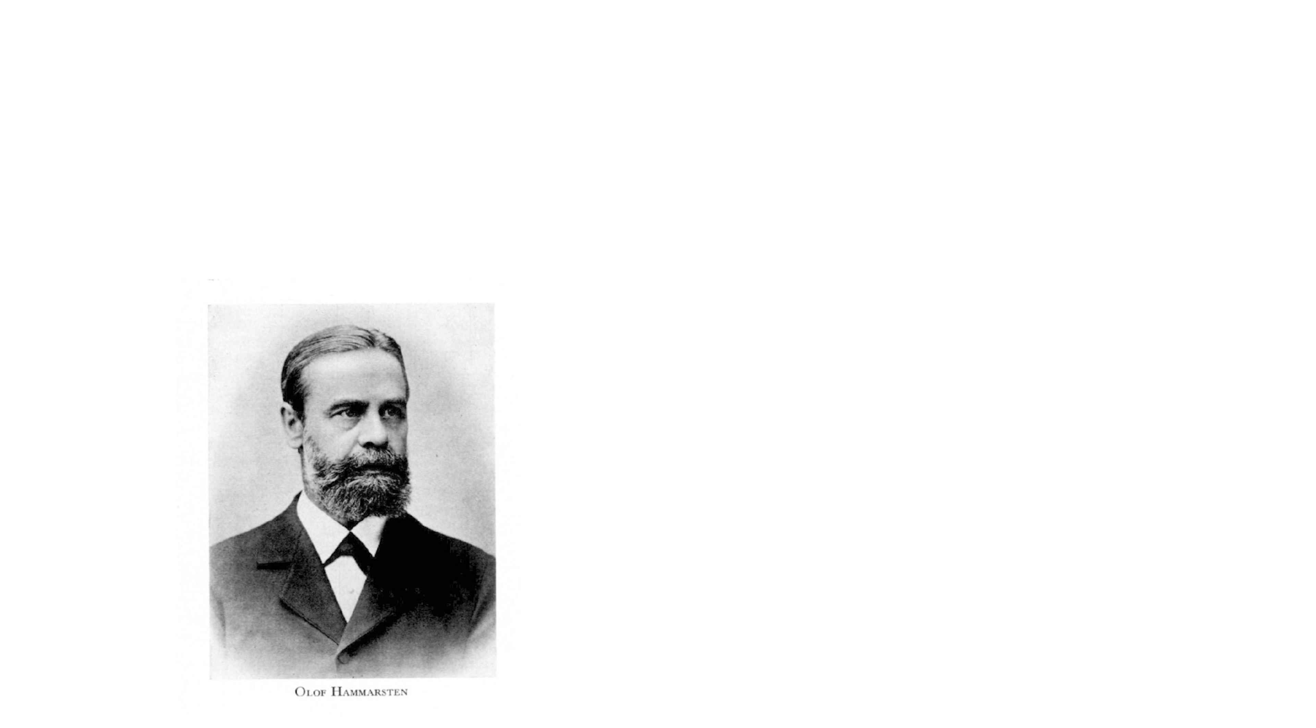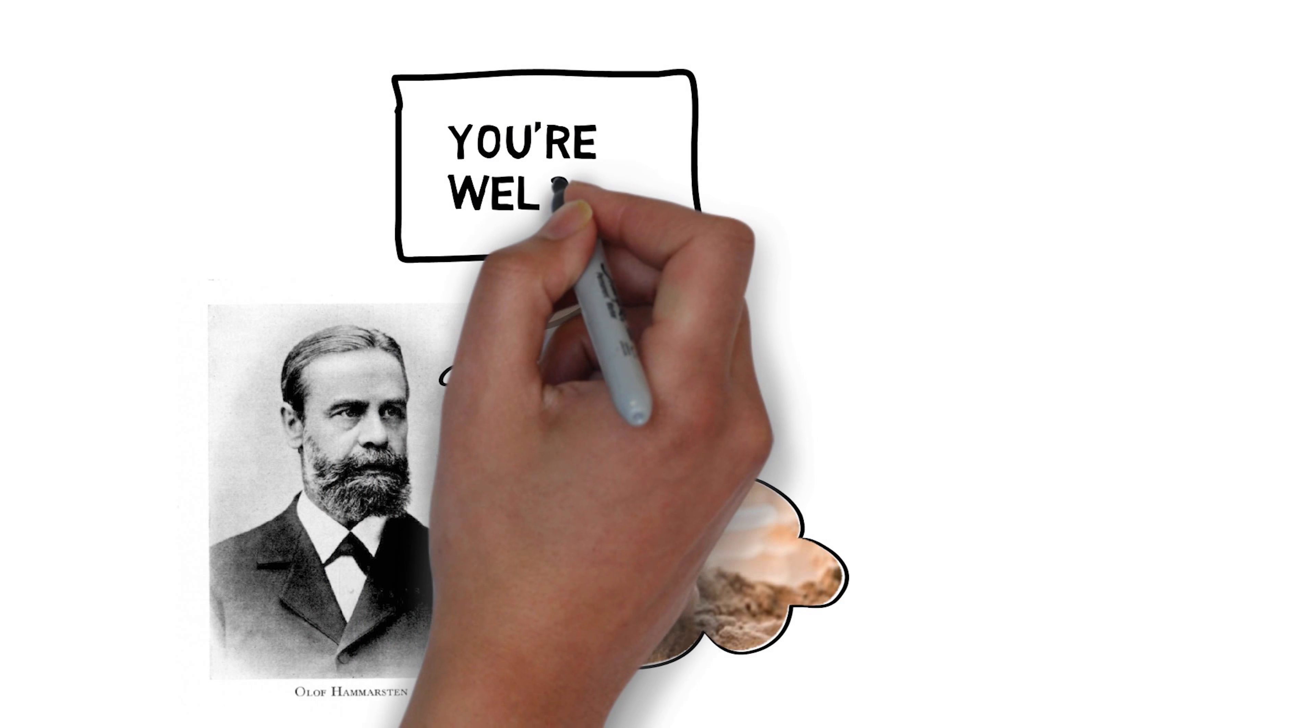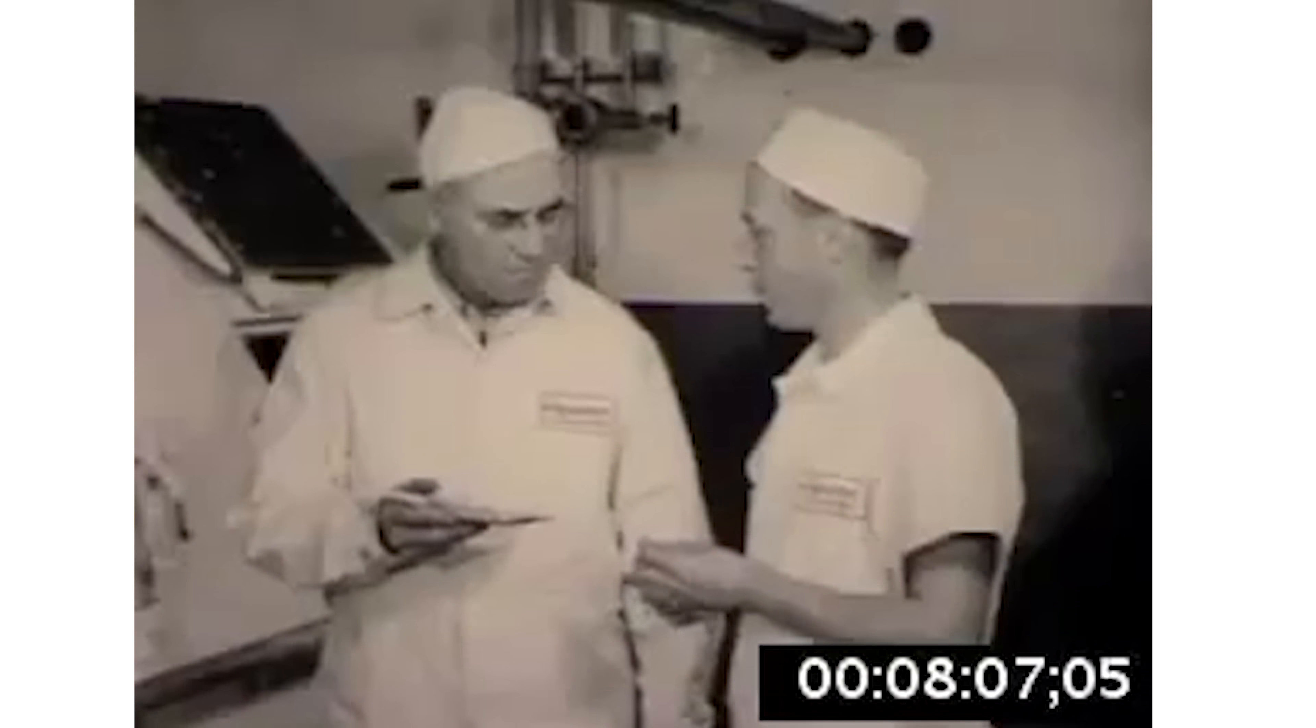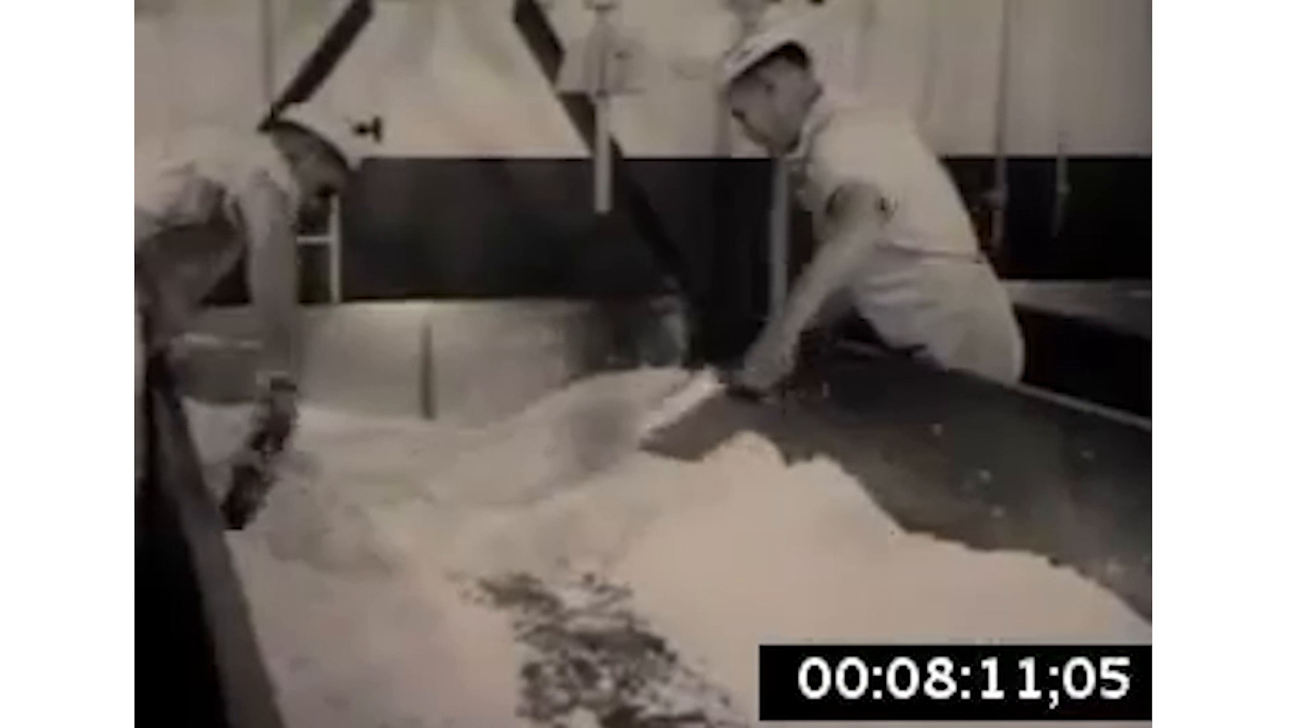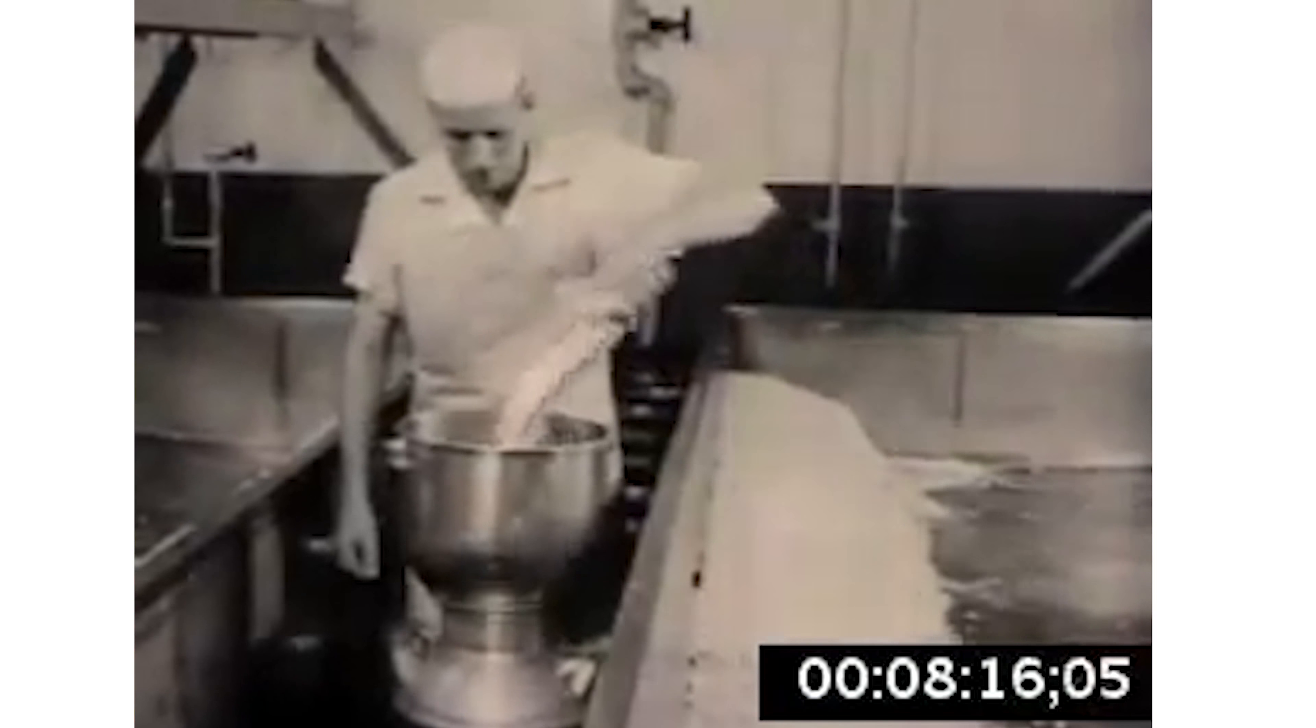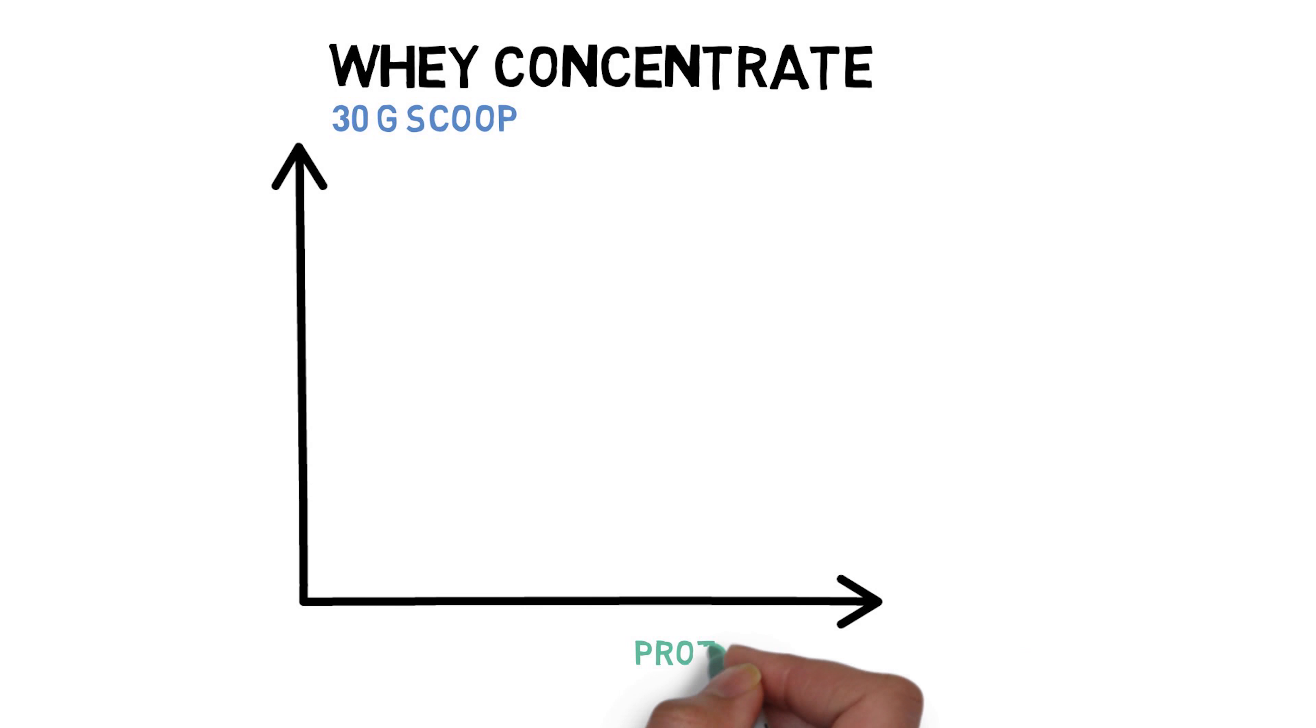Whey is one of the most popular types of protein supplement. First identified by Olaf Hammerstein, the renowned Swedish biochemist, whey protein is a component of milk and thus, a byproduct of the cheesemaking process. Cheesemakers figured out that if you take the excess liquid leftover when you make cheese curds and concentrate it, you can make a powder that's up to 80% protein, while also containing immunoglobulins, which help keep you healthy, and a few carbs and fats. These are called whey protein concentrates.